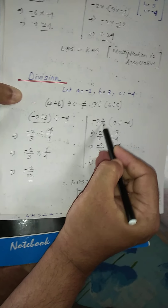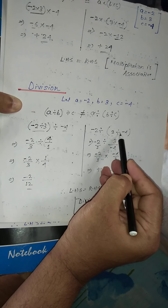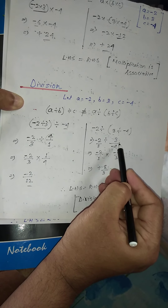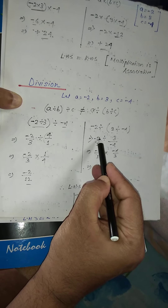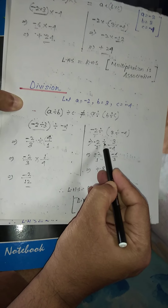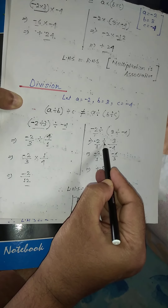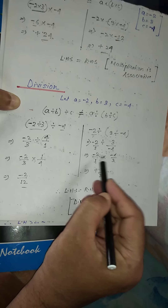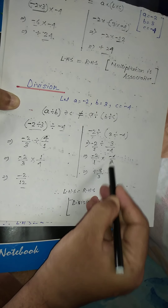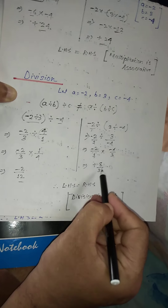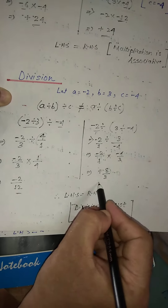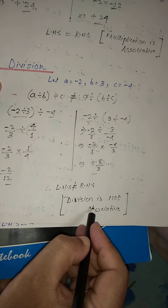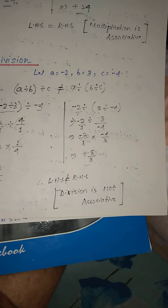For the RHS: in place of a, minus 2; inside the bracket, in place of b is 3, divide sign, in place of c is minus 4. We write it in fraction format: minus 2 over 1, divided by 3 over minus 4. Replacing division with multiplication and taking the reciprocal gives minus 2 over 1 multiplied by minus 4 over 3. Minus times minus is plus, so 2 fours are 8 and 1 times 3 is 3, giving 8 over 3. The answers are not matching, so LHS is not equal to RHS: division is also not associative for integers.